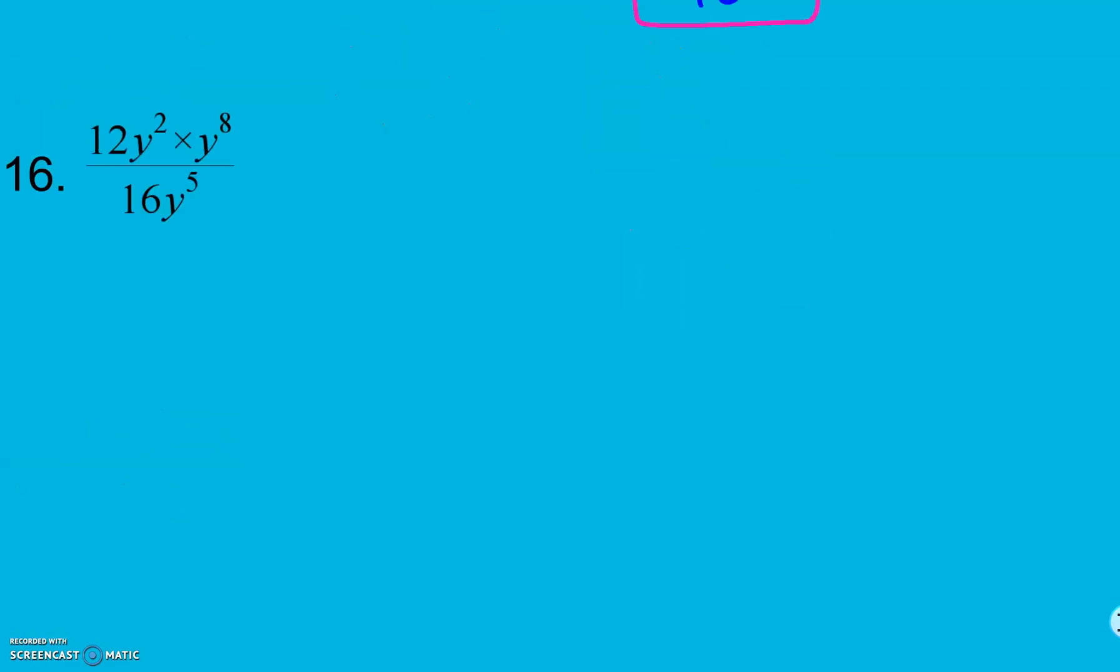And, in 16, here I have 12 times y squared times y to the eighth power over 16 times y to the fifth. My numerator is not as simple as I can get it. I can go ahead and combine my y terms.